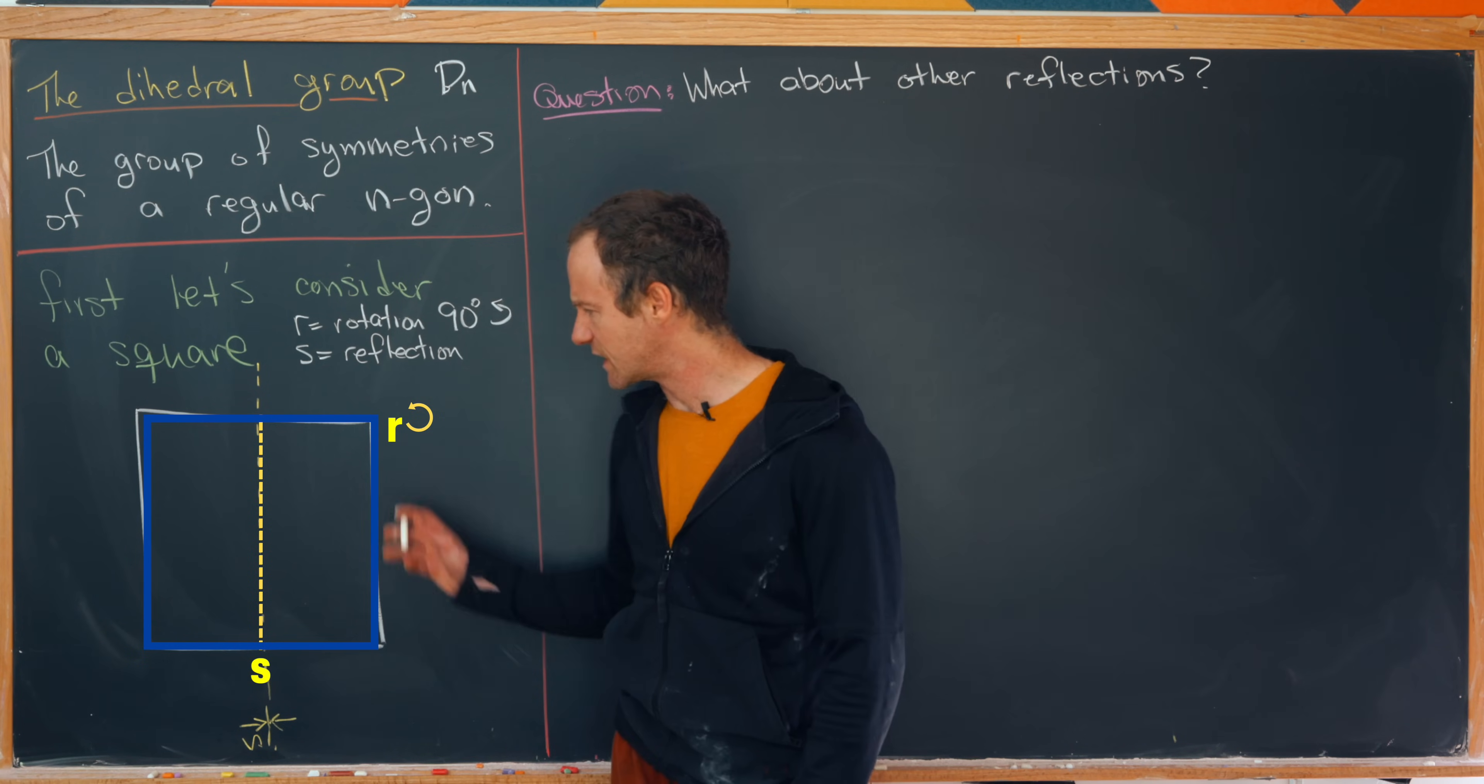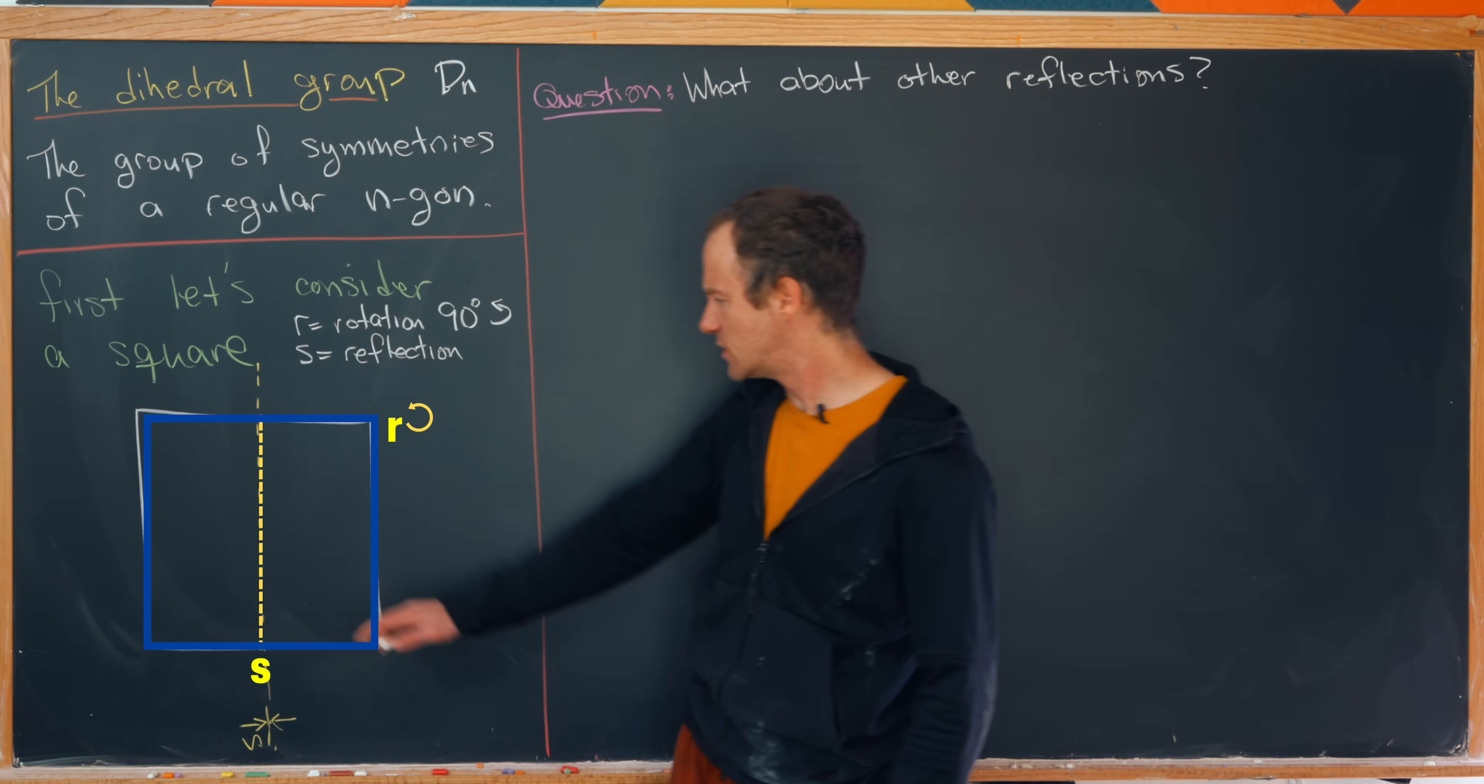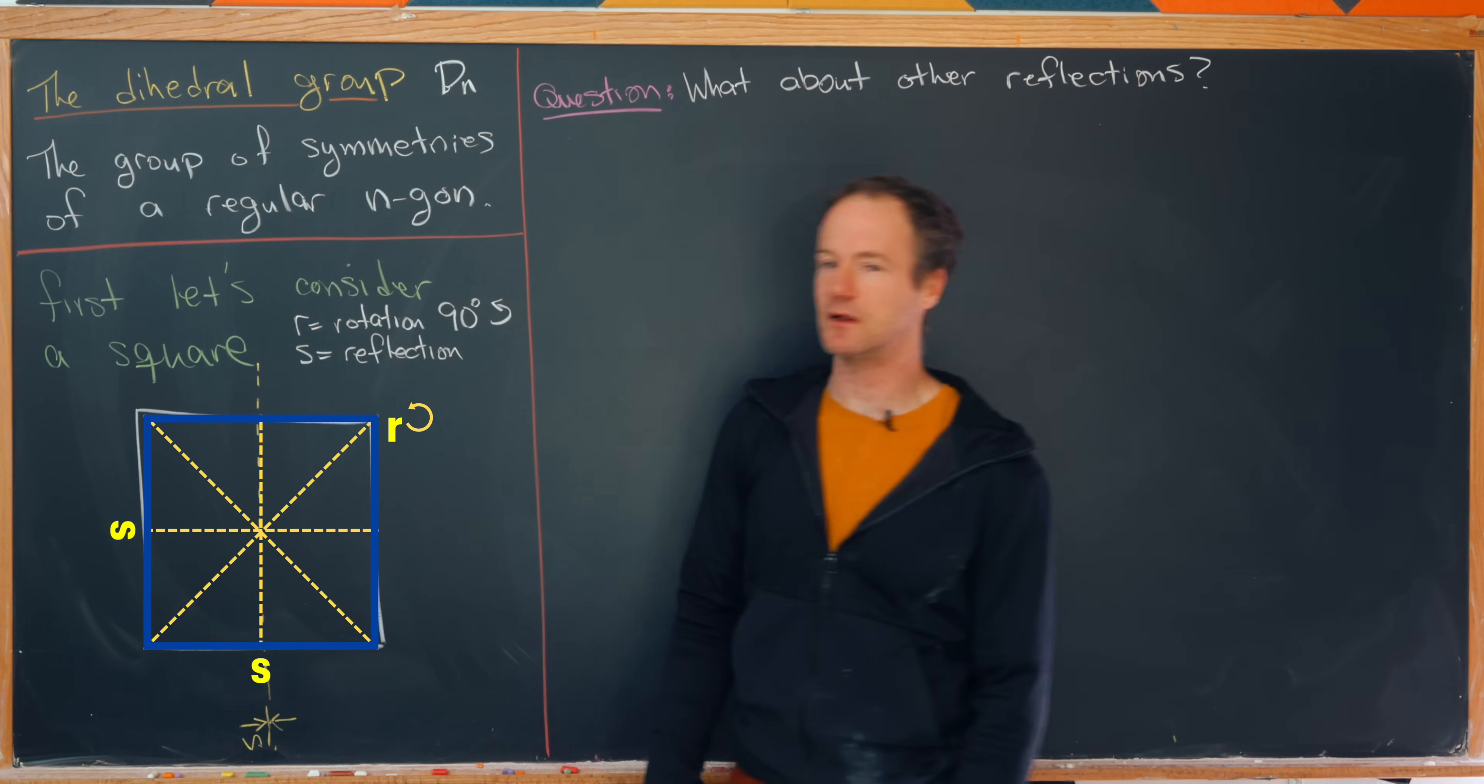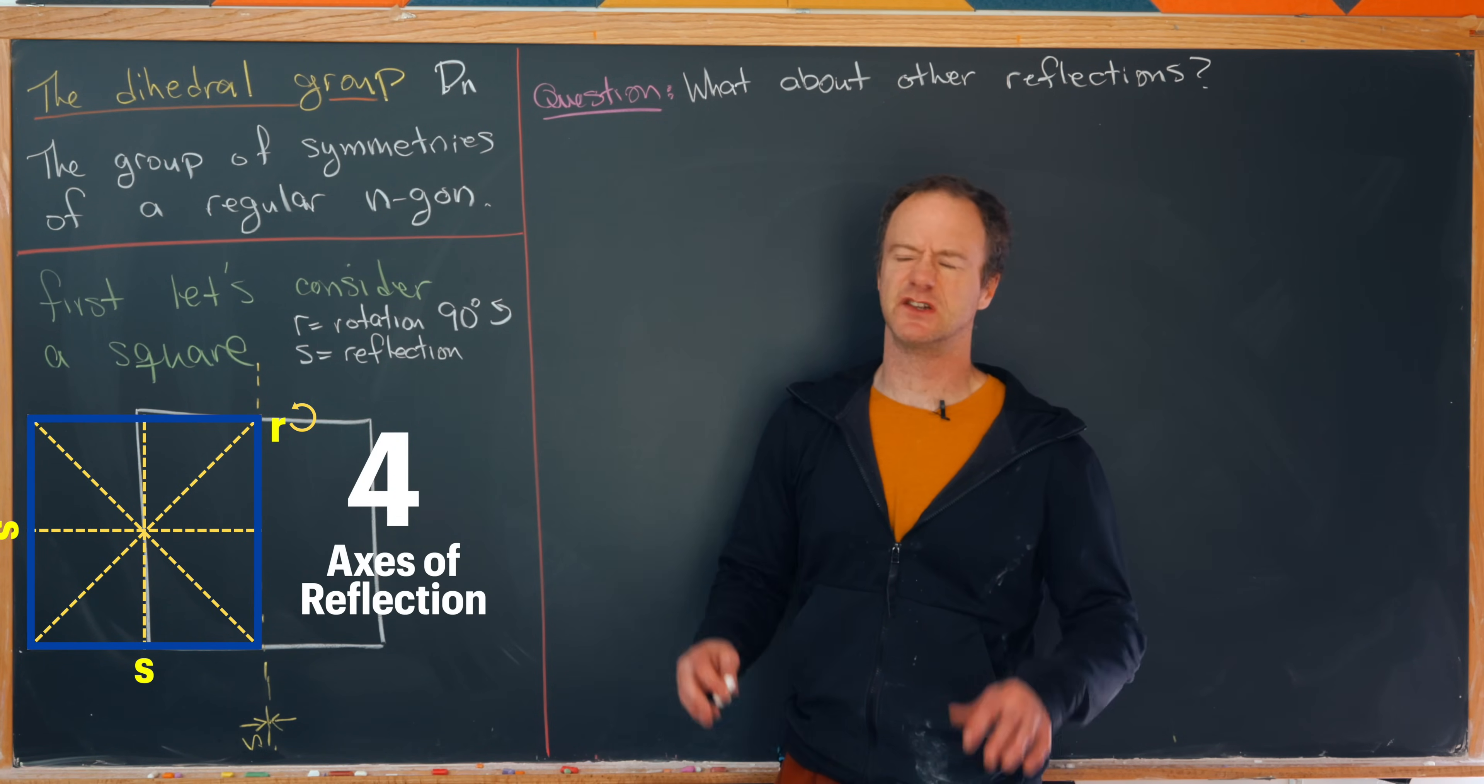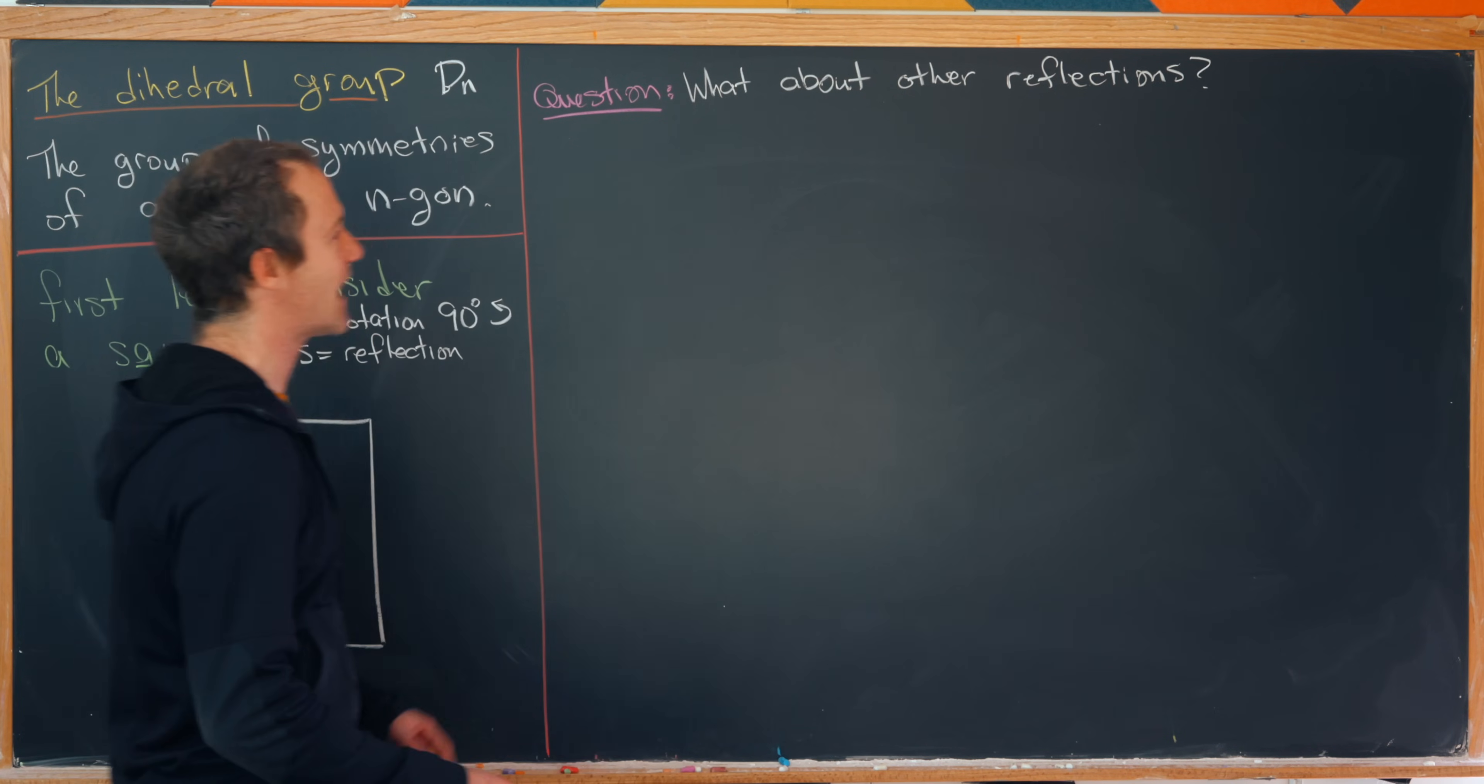So that's definitely all of the rotational symmetries of this picture. But it's not all of the reflections. This is only a single axis of reflection. But let's notice we can also reflect it by a horizontal axis as well as two diagonal axes. So there should be, in fact, four total symmetries which are reflections. So what about these reflections? Can we build them out of these parts right here? And in fact we can.